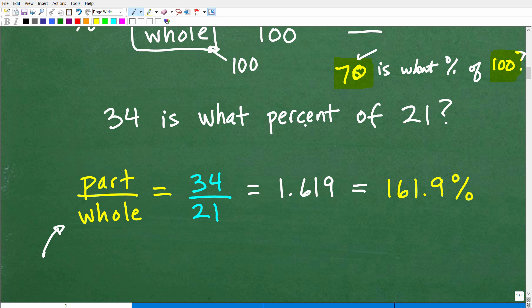34 in this case is the part. Okay. 34 is what percent of 21? Well, we're going to treat that 34 as the part. So again, this could be kind of confusing. So it's going to be 34 over 21.